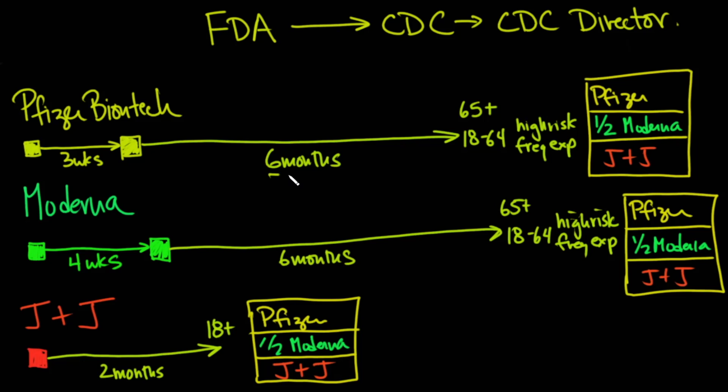And again, Pfizer-BioNTech six months after the second dose if you are either 65 years of age plus or 18 to 64 and a high-risk group or frequently exposed, you can either get the Pfizer-BioNTech vaccine, a half Moderna dose, or the Johnson & Johnson vaccine.